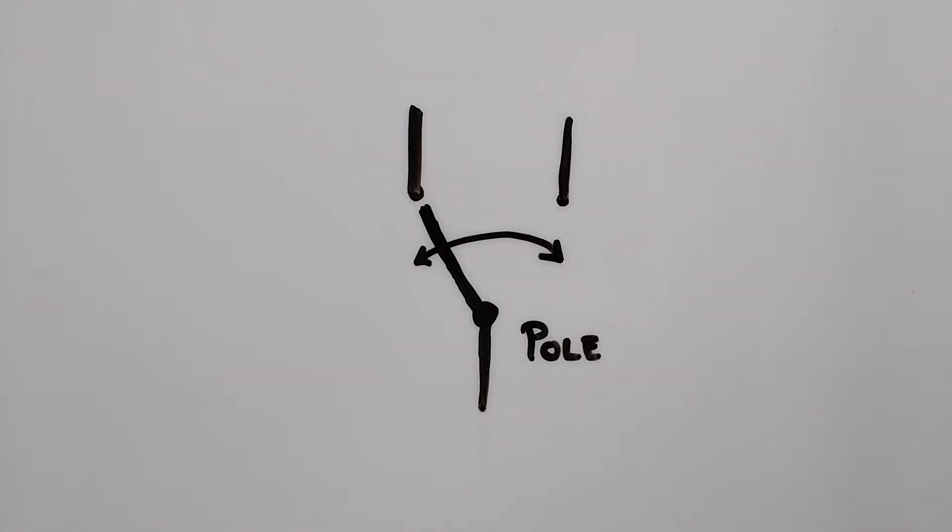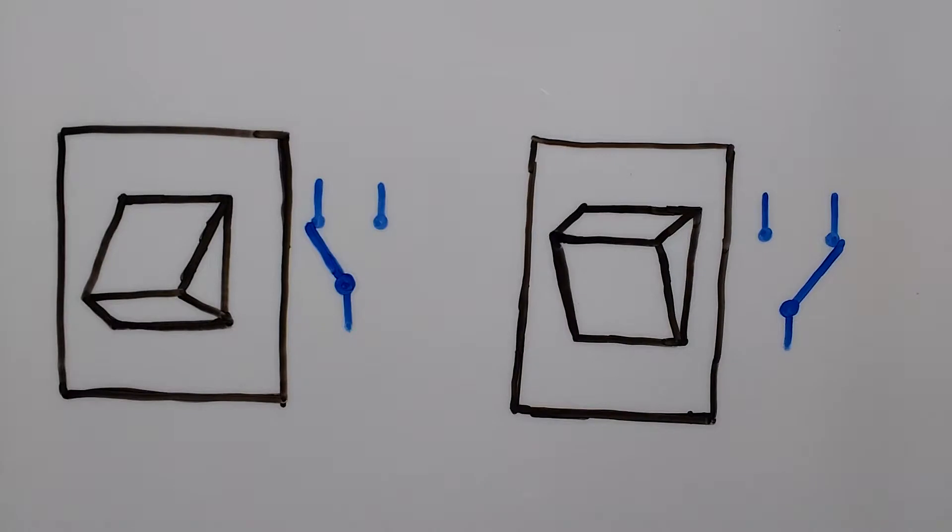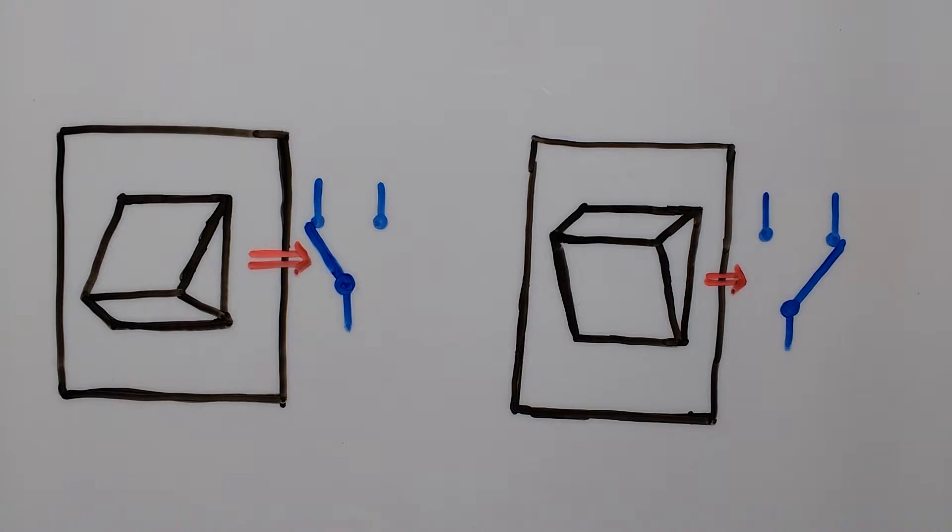These kind of circuits are called two way switching circuits. Switches used in them have single pole and two throws. That is, on toggling it up, pole connects to one terminal and on toggling it down, pole connects to another terminal.